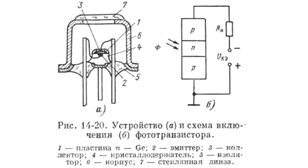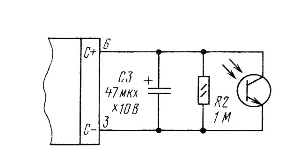A phototransistor has a structure of an NPN or PNP transistor and it can amplify current. Two variants of transistor connection are used. Diode connection employs only two contacts — those of emitter and collector. Transistor connection employs three contacts, when not only light but also electric signals are fed to the input.